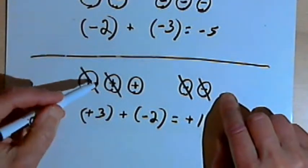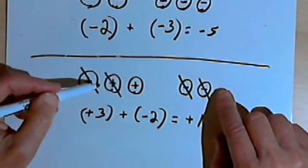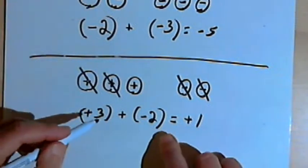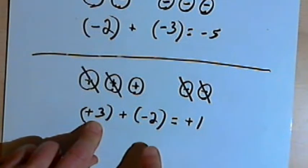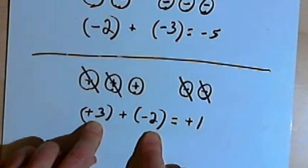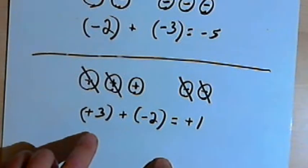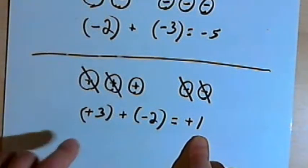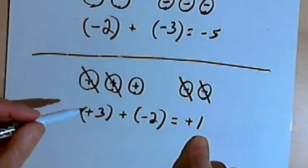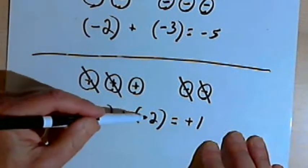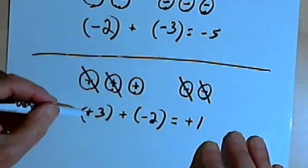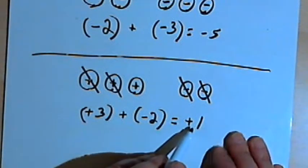I couldn't just add the total number of chips because they were different. So since they were different, I take the difference of the absolute values of those two numbers. The absolute value of 3 is 3, and the absolute value of negative 2 is 2. To find the difference, I subtract the smaller number from the bigger number: 3 minus 2 gives 1. Then to decide whether my answer is positive or negative, I look at which absolute value was bigger. The 3 was bigger than the 2, and the 3 originally had a positive sign, so I end up with a positive number.